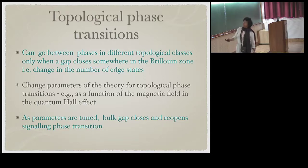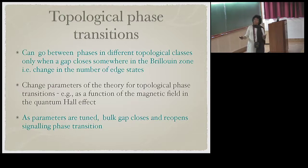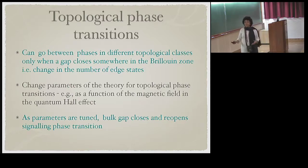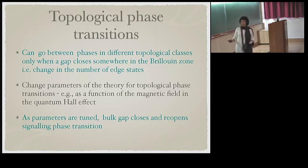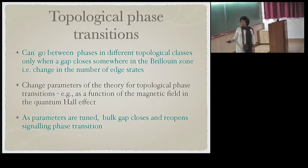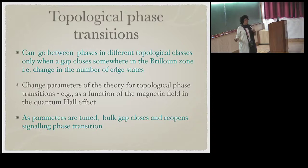What we are interested in is topological phase transitions. One can go between phases in different topological classes when a gap closes somewhere in the Brillouin zone and there is a change in the number of edge states. The idea is to change parameters — for instance the magnetic field in the quantum Hall effect — and as parameters are tuned, the bulk gap closes and reopens, leading to a new phase.